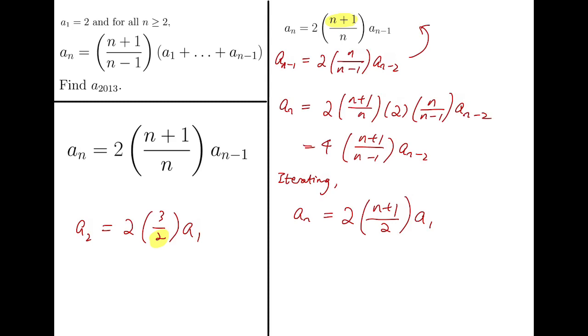Now, as for the power, it should be n minus 1 because you may notice that by looking at the subscript, when we go down by one step, n minus 1 going down to n minus 2, we have an extra factor of 2.